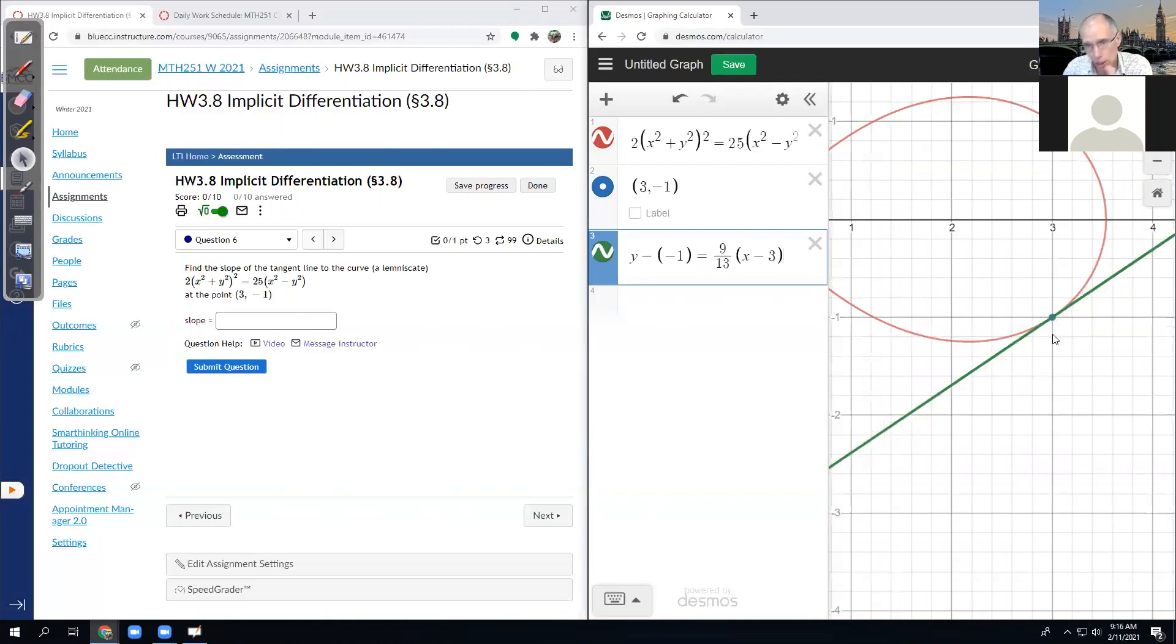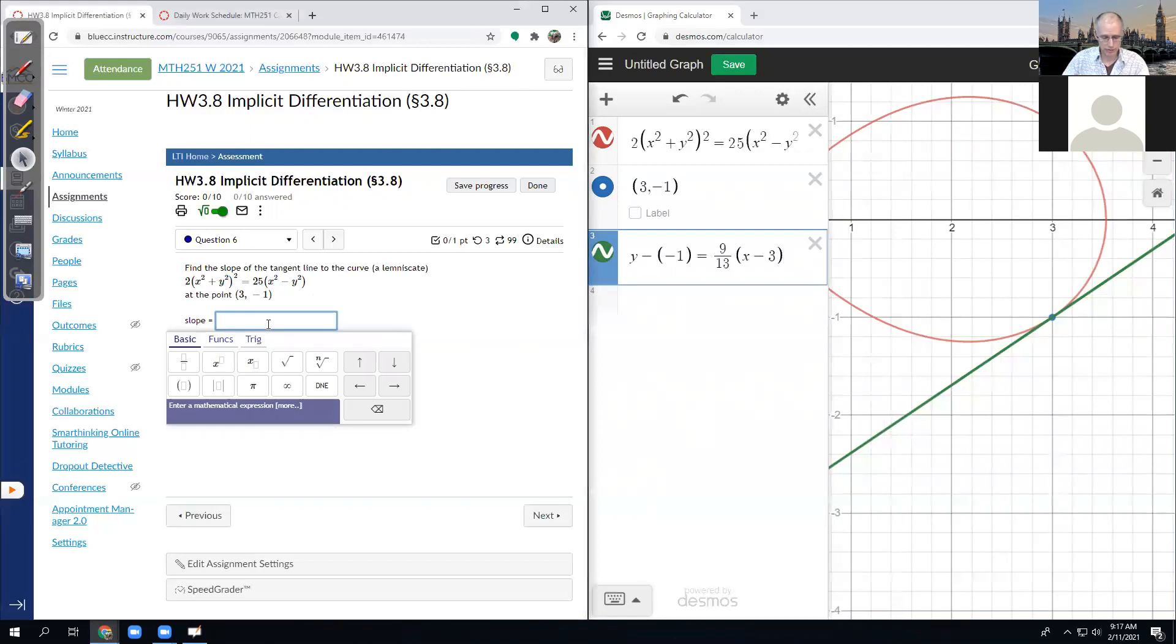So again, I want you to get in the habit of, before you hit submit my answer, see if you actually have the right answer by checking yourself, because on the test that's all you got, just you. So the slope definitely for mine seems to be 9 thirteenths.